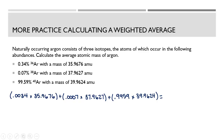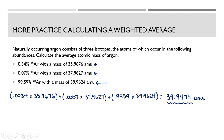Is 39.9474 close to 39.9624? It is. Is it less than 39.9624? It is. It should be close because most argon is argon-40, and just slightly less than 39.9624 because the remaining isotopes — argon-36 and argon-38 — are lighter and present in very small quantities.